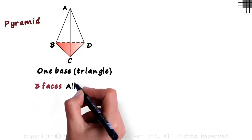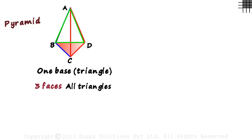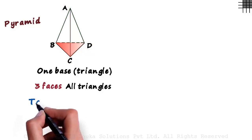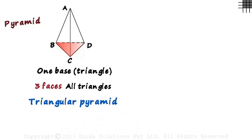It has three faces and all of them are triangles. The three triangles are ABC, ACD and ABD which is at the back. This is called a triangular pyramid. It's called that because its base is a triangle.